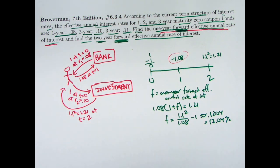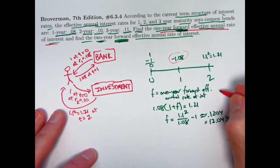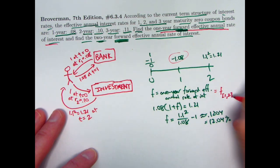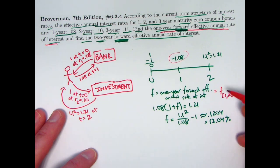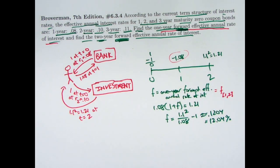In Broverman's book, starting with the seventh edition, they use an alternative notation for this. They would label this F sub the interval from one to two, to emphasize that the interest rate is effective over the interval from time one to time two. That would be the notation used, and there's the answer.